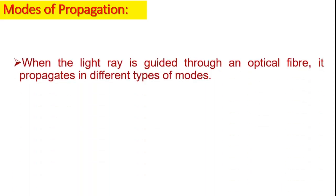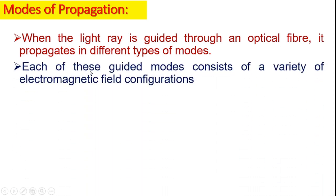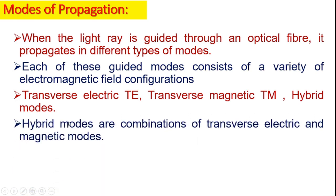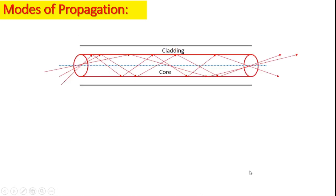Now let us see modes of propagation. When the light ray is guided through an optical fiber, it propagates in different types of modes. Each of these guided modes consists of a variety of electromagnetic field configurations: transverse electric, transverse magnetic, and hybrid modes. Hybrid modes are combinations of transverse electric and magnetic modes. In simple terms, these modes can be visualized as the possible number of allowed paths of light in one optical fiber.